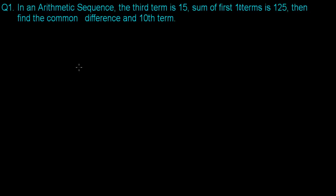Let's deal with more questions in arithmetic sequence and series. Here we'll be solving a few typical questions that generally come in examinations. In an arithmetic sequence, the third term is 15 and the sum of the first 10 terms is 125. Find the common difference and the 10th term.